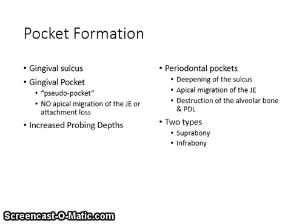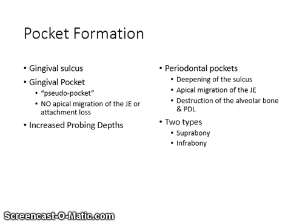In a gingival pocket, there is no apical migration of the junctional epithelium and no destruction of the periodontal ligament fibers. A periodontal pocket is an area of tissue destruction left by the periodontal disease process. It shows apical migration of the junctional epithelium, destruction of the alveolar bone, and destruction of PDL fiber bundles. The majority of periodontal pockets in most adult patients with periodontitis are inactive sites — the pocket is an indicator of past destruction from periodontitis.